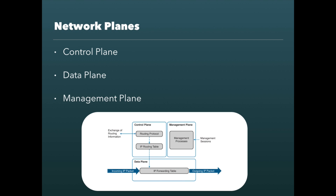Before I show you how similar SDN is with centralized wireless, let me explain the three types of network planes. This is important when it comes to understanding SDN and what it does behind the scenes. When you're dealing with enterprise network devices like enterprise switches and routers, there are three types of subsystems on that device: there is the control plane, the data plane, and the management plane. Any traffic directed to the network device itself for management or network services is handled by the control plane — and when I say network services, we are talking about routing, switching, and the management functions of the network devices.